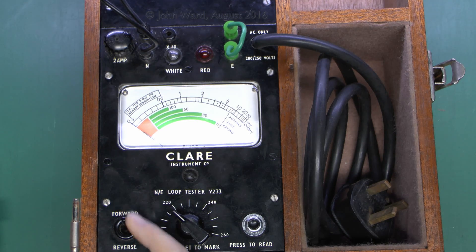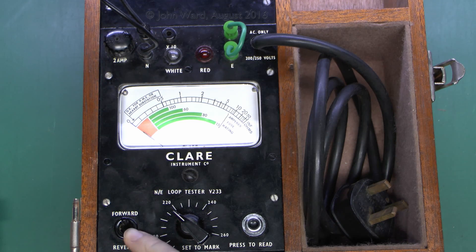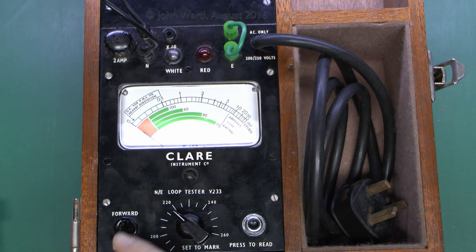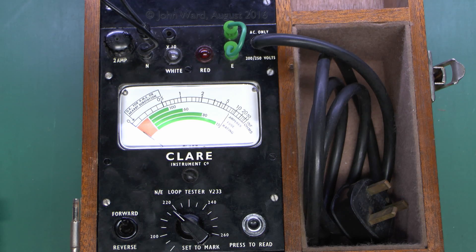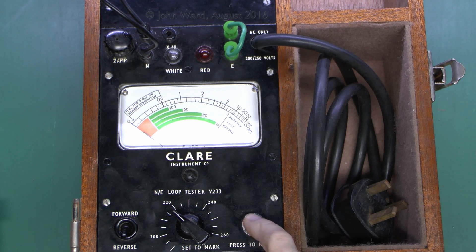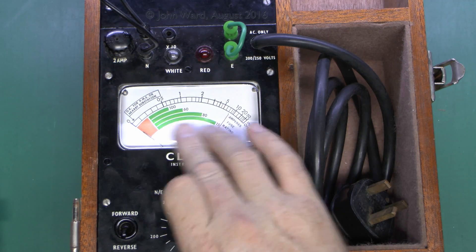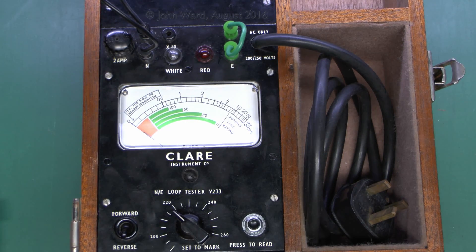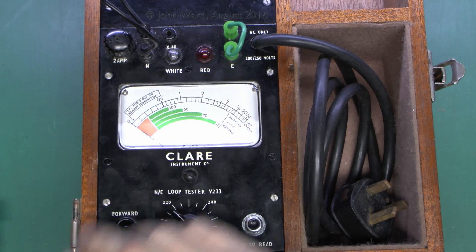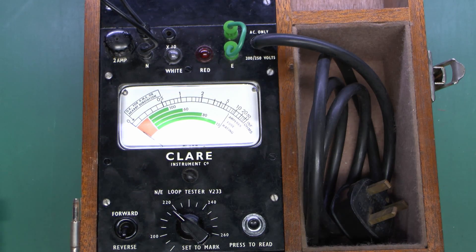And once you've done that you've got this forward and reverse, which is basically just changing the polarity of the test current. As this uses DC as the test current, you just put it in reverse, then you test again, and then you're just taking the average of the two readings. And again you have to work that out yourself, so a bit of maths required there.